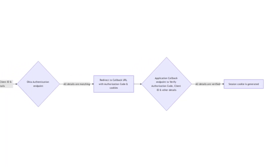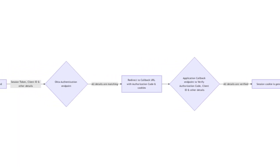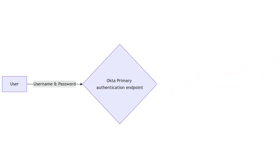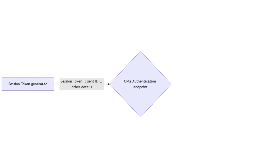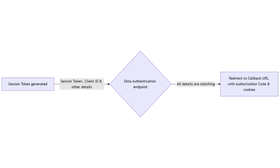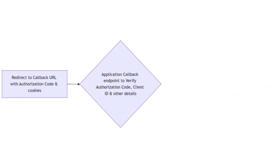This flow diagram outlines the authentication process using Okta. Username and password are passed to the Okta primary authentication endpoint. If authentication is successful, a session token is generated. The session token, client ID, and other details are passed to the Okta authorization endpoint. If all details match, the user is redirected to the callback URL with an authorization code and cookies. The application callback endpoint verifies the authorization code, client ID, and other details. If all details are verified, a session cookie is generated.